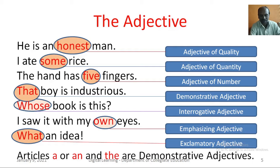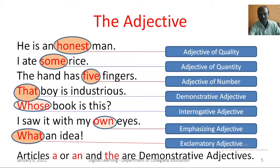The Adjective. An adjective is a word used to add something to the meaning of a noun. He is an honest man — here, honest is an adjective of quality. I ate some rice — here, some is an adjective of quantity. The hand has five fingers — here, five is an adjective of number. That boy is industrious — here, that is a demonstrative adjective. Whose book is this? — here, whose is an interrogative adjective. I saw it with my own eyes — here, own is an emphasizing adjective. What an idea! — here, what is an exclamatory adjective.